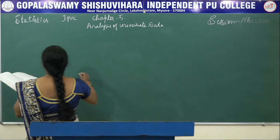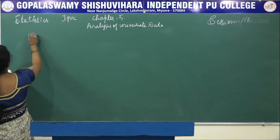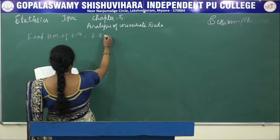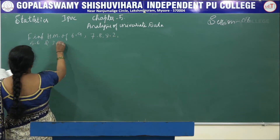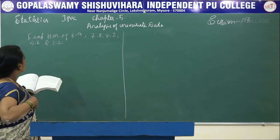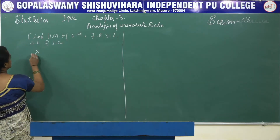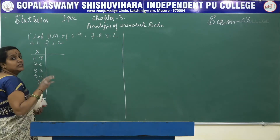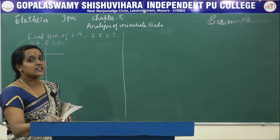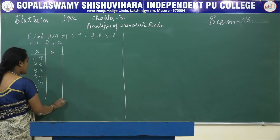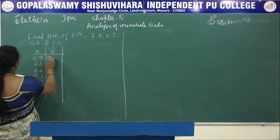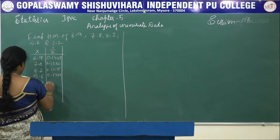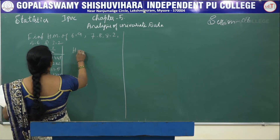First we will solve a problem on HM. Find the harmonic mean of 6.9, 7.8, 8.2, 5.6, and 3.2. These are the X values. The definition of harmonic mean says we first take the reciprocal of the observations, that is 1/X. The 1/X values are 0.1449, 0.1282, 0.1219, 0.1786, and 0.3125.